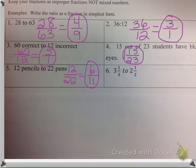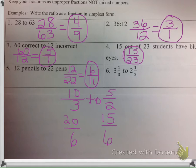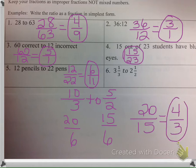Here's the hard one: 3 and a third to 2 and a half. The first thing I would do is write these as improper fractions. 3 and a third becomes 10 thirds — 3 times 3 is 9, plus 1 is 10. 2 and a half becomes 5 halves — 2 times 2 is 4, plus 1 is 5. Then find your common denominator, which is 6. 3 goes into 6 twice: 2 times 10 is 20. 2 goes into 6 three times: 3 times 5 is 15. Take the numerators in the same order: 20 over 15. Simplify — 5 goes into both — giving 4 over 3, written as an improper fraction. 1 and one third is incorrect; you have to leave it as 4 thirds.